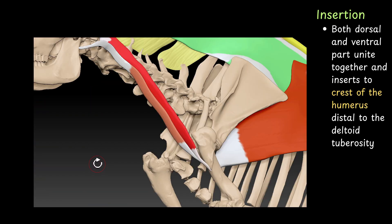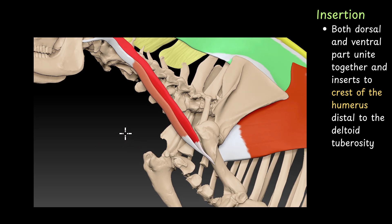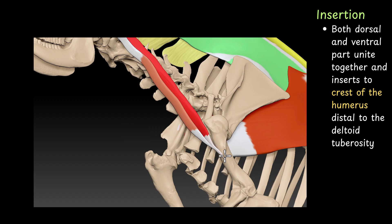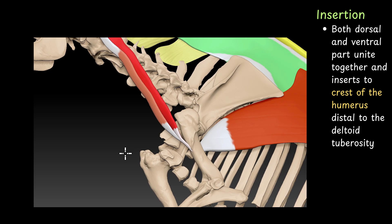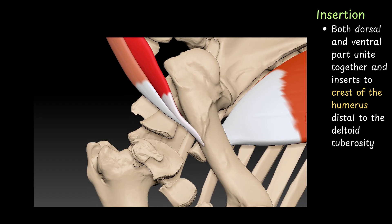Insertion: both the dorsal and ventral parts unite together at the point of insertion. So this is the dorsal part and this is the ventral part — at the insertion point both parts unite together and insert into the crest of the humerus, distal to the deltoid tuberosity. So this structure is the crest of the humerus, and this is the deltoid tuberosity. The dorsal part, cleidooccipitalis, and the ventral part, cleidomastoideus, unite together and insert into the crest of the humerus distal to the deltoid tuberosity.